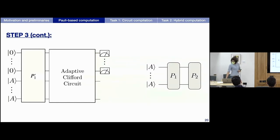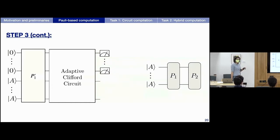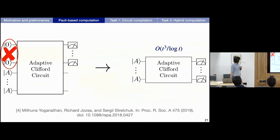This shows you can simulate any Clifford+T circuit using Pauli-based computation. Now, since most people are more familiar with quantum circuits, we thought: how can we map this back to circuits? In 2019, there is a paper with the extended Gottesman-Knill theorem, which essentially says that if you have an adaptive circuit on the left, you can transform it into an adaptive circuit acting only on the magic register.